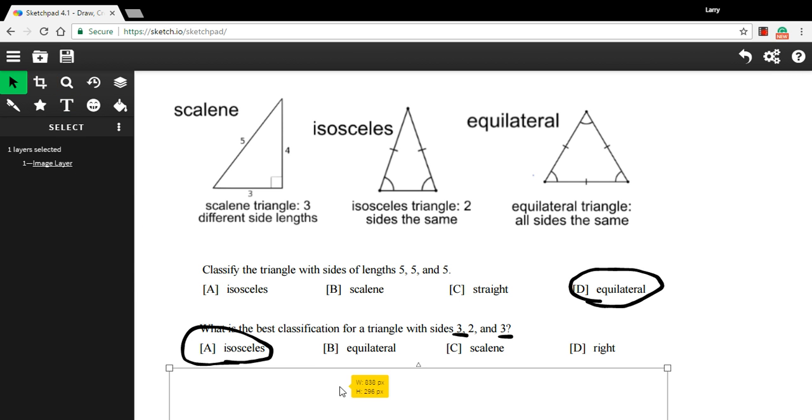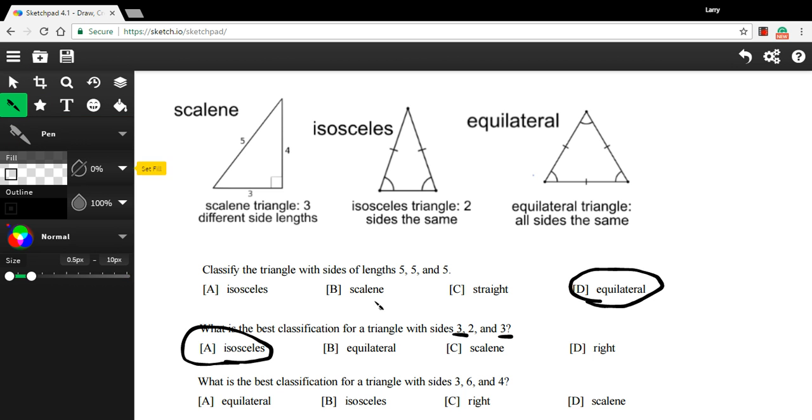And finally, we have, what is the best classification for a triangle with sides three, six, and four? All three of those numbers are different from each other. That is our scalene triangle.